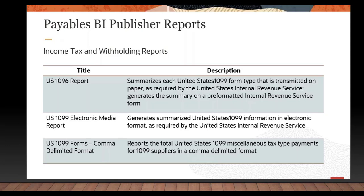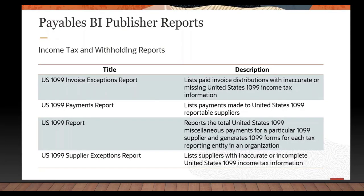These four reports are also US-specific: US 1099 Invoice Exceptions Report, US 1099 Payments Report, US 1099 Reports, and US 1099 Supplier Exceptions Report. That concludes our brief overview of predefined BI Publisher Accounts Payable Reports in Oracle Cloud. Thank you for watching.